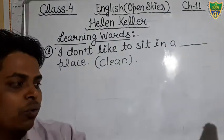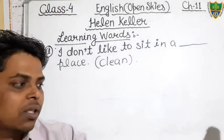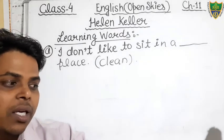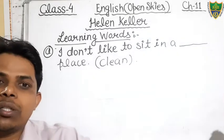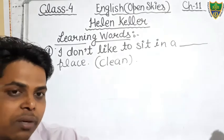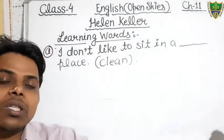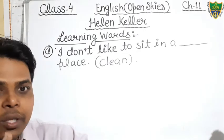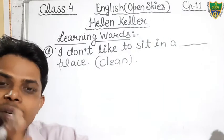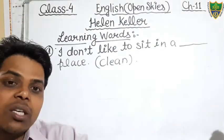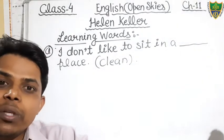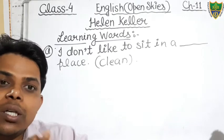In the exercise 'learning words,' you have to find the opposite of the words given in the bracket to fill in the blanks. Sentences are given that are incomplete, with blanks and a particular word in the bracket. You have to fill in the opposite of that word. For example, if the word given is 'clean,' the opposite is 'dirty.' You have to fill in 'dirty.'